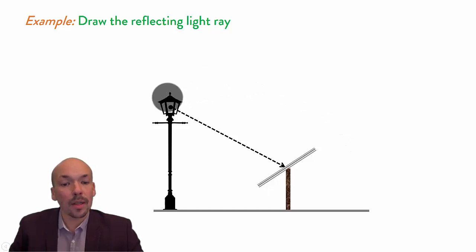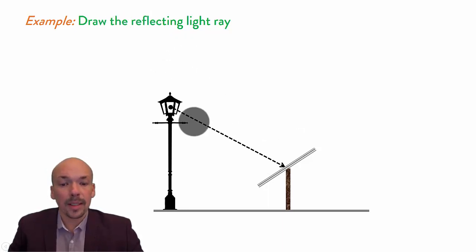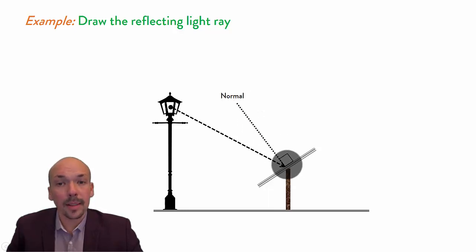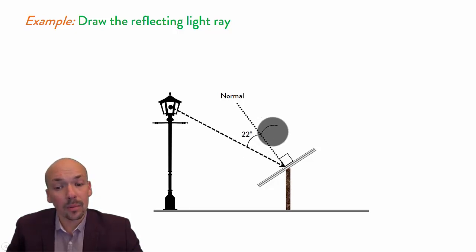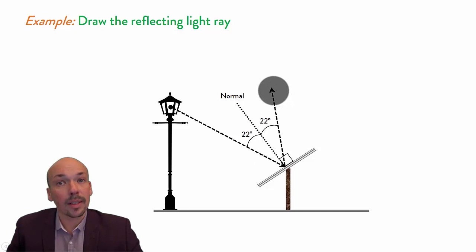Now, a few examples. We have a light source here and a ray from it coming onto this mirror, and you are now able to draw the reflecting light ray. You can take this over on a piece of paper and try it yourself. First, you draw the normal perpendicular to the surface — at 90 degrees — at the place where the light ray hits the mirror. Then you measure this angle, which is for instance 22 degrees. Now you know the reflected angle is also 22 degrees, so you can draw that line. Now you have the reflected ray, and you know exactly where the reflected light ray goes.